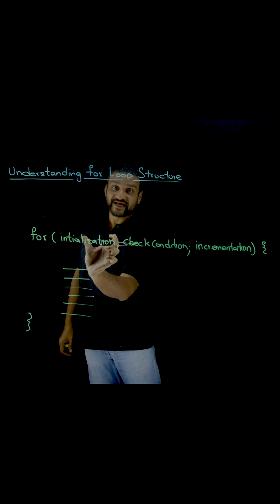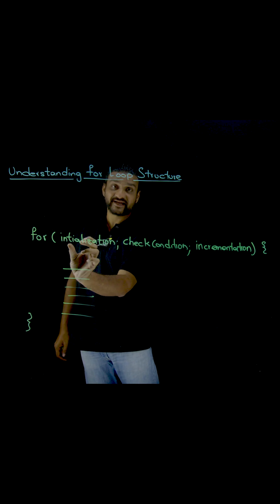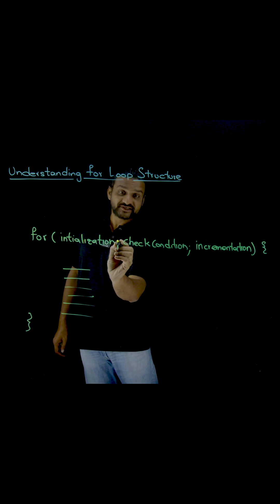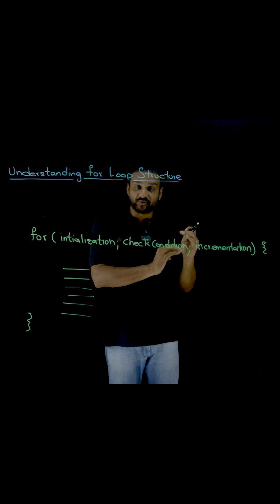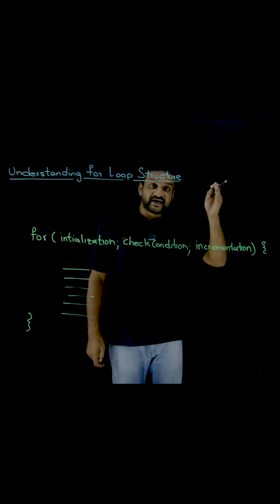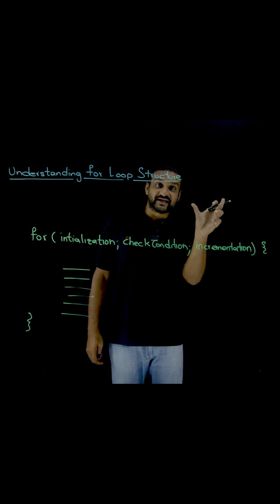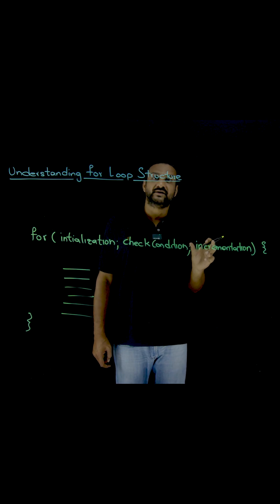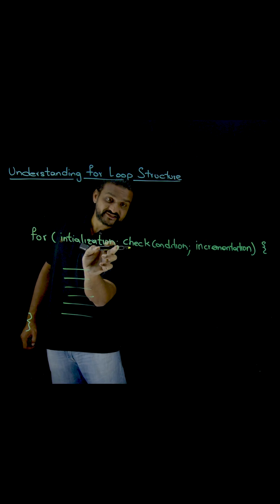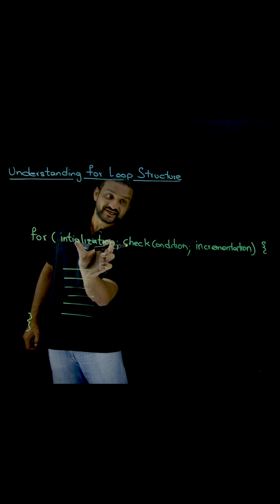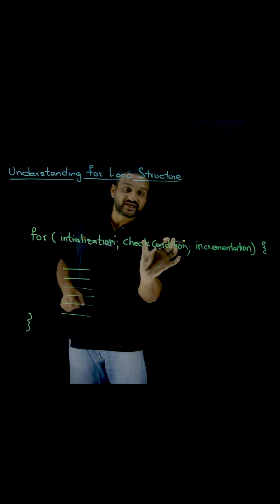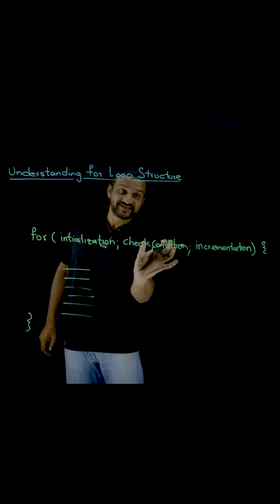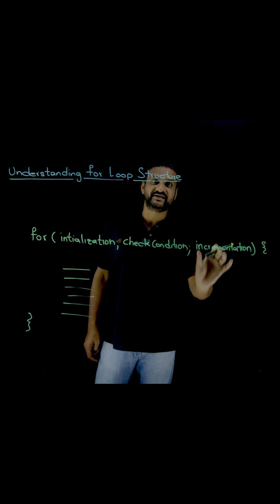The first statement is the initialization statement. Every statement ends with a semicolon — everything which ends with a semicolon is considered as one single line of code or a statement of the program. So here we are having three statements: the first one is the initialization statement, the second one is the conditional checking statement, and the third one is the incrementation statement.